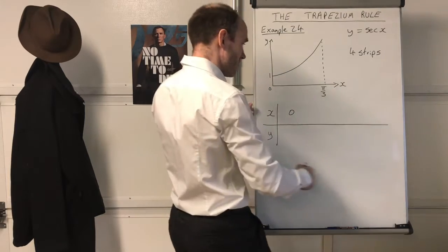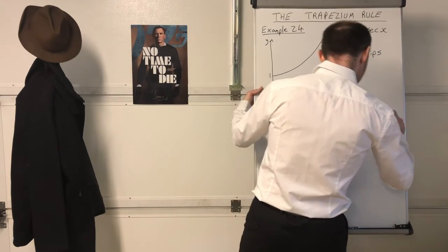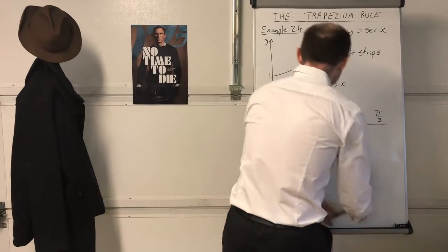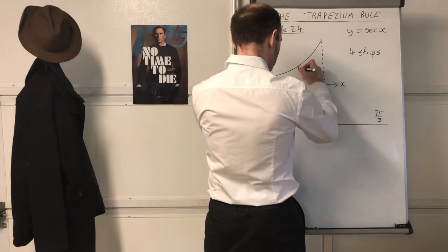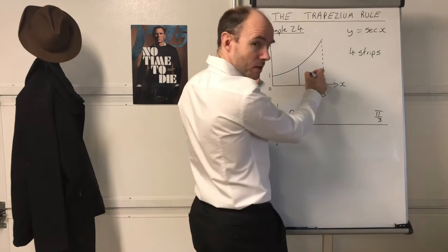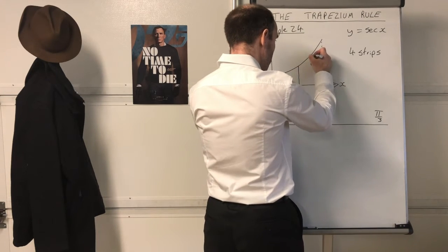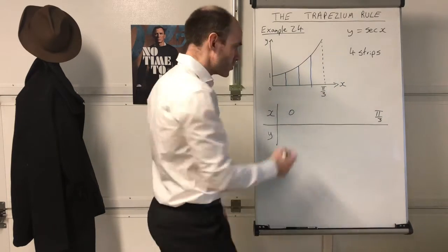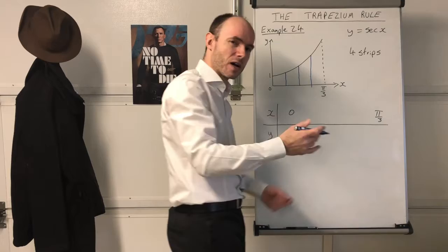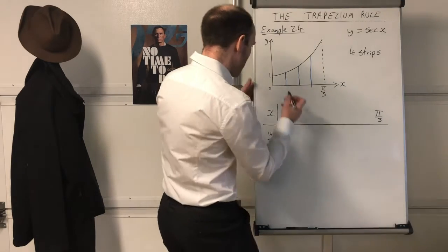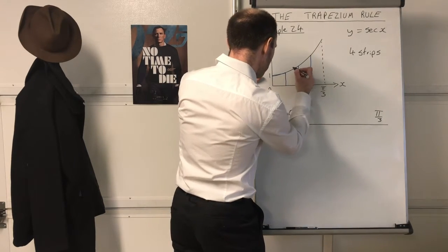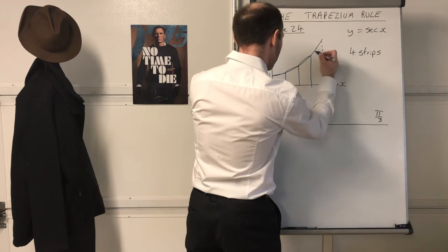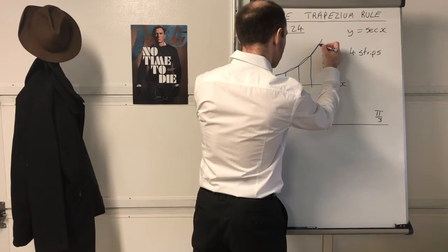You start at zero and the last value is going to be π/3. If it says divide up into four strips, it's quite simple. What I suggest you do is split it up like this: first into two strips, and then divide again to get four strips. If you divide into eight strips, you'd do that again. I'm going to show you what the trapezia look like, and that's going to help with the last question.